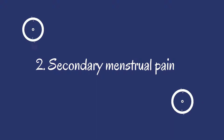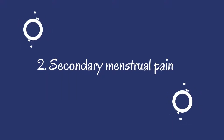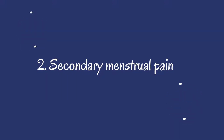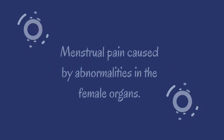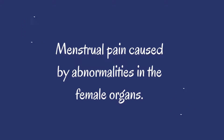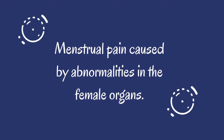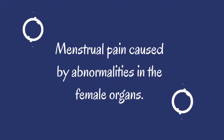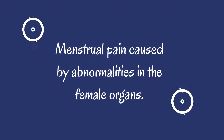Two: secondary menstrual pain — menstrual pain caused by abnormalities in the female organs.